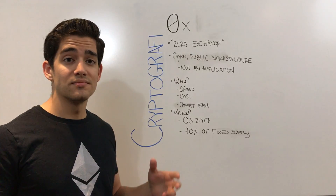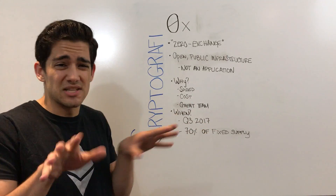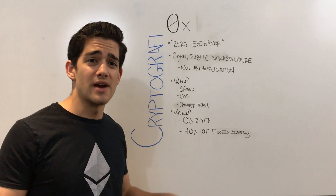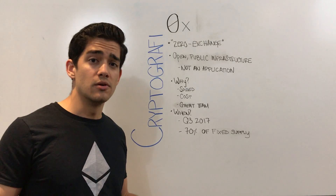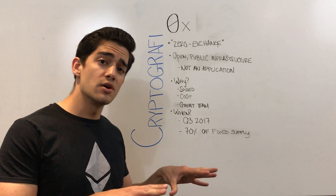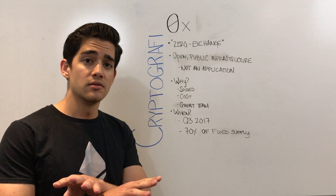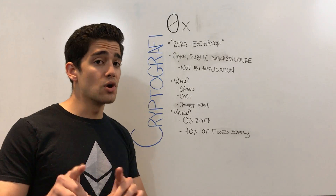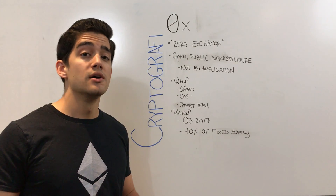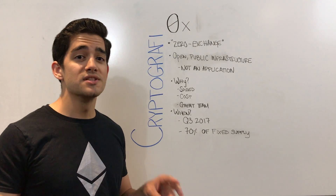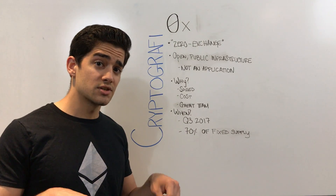Now, that just creates kind of this big web that makes it really difficult to interact. And so what 0x is trying to do is make it easy to go from one token to the next on the blockchain. If you don't know what a token is, I'd highly recommend pausing this video and checking out our tokens in two minutes video — check out the link in the description.